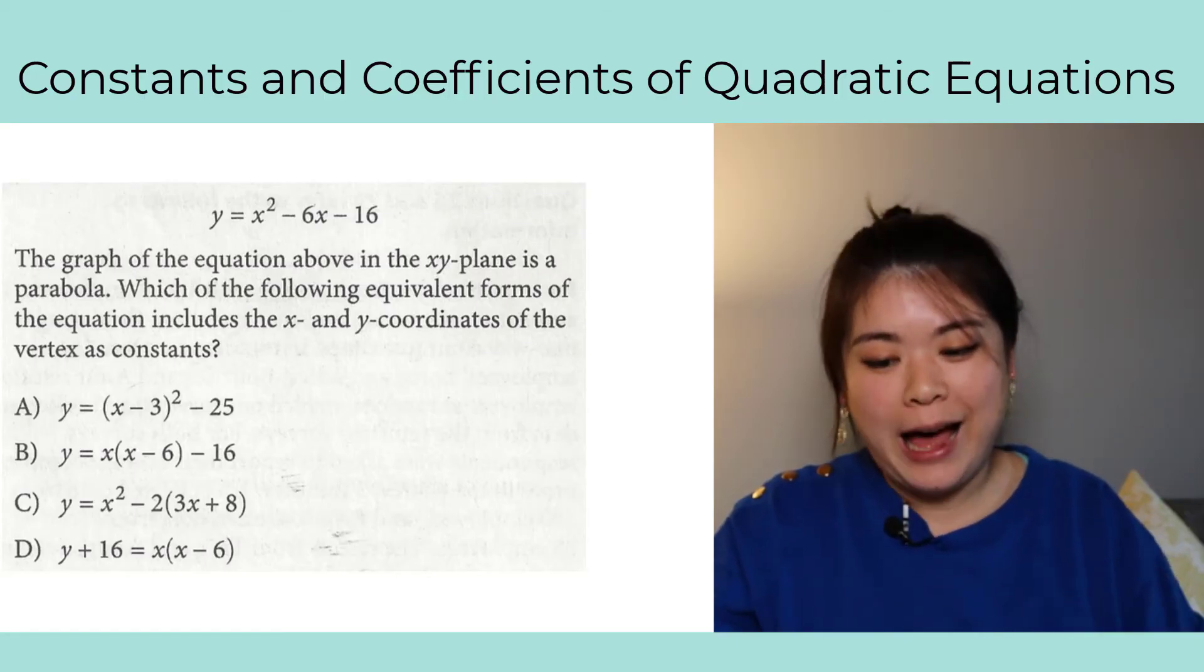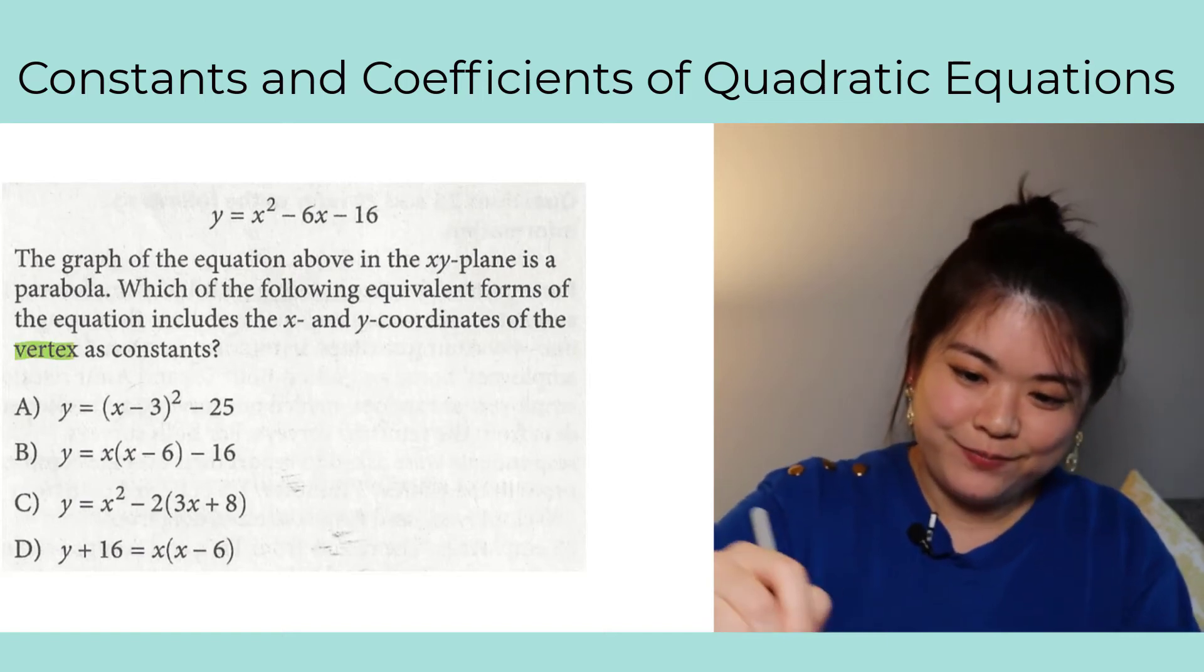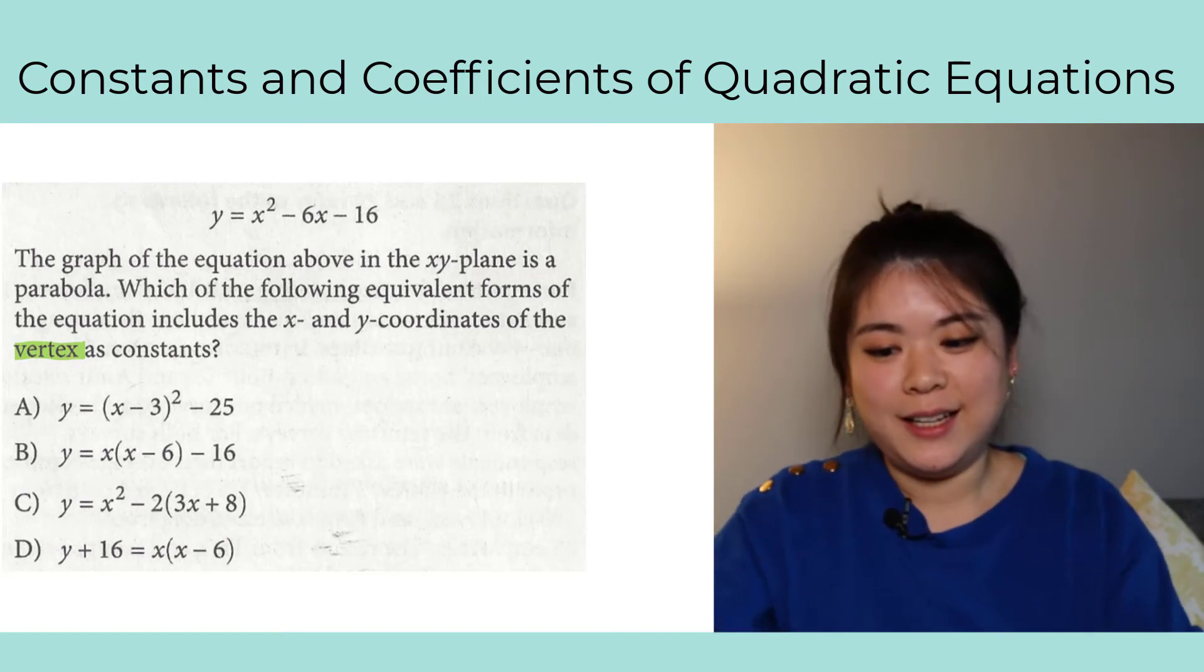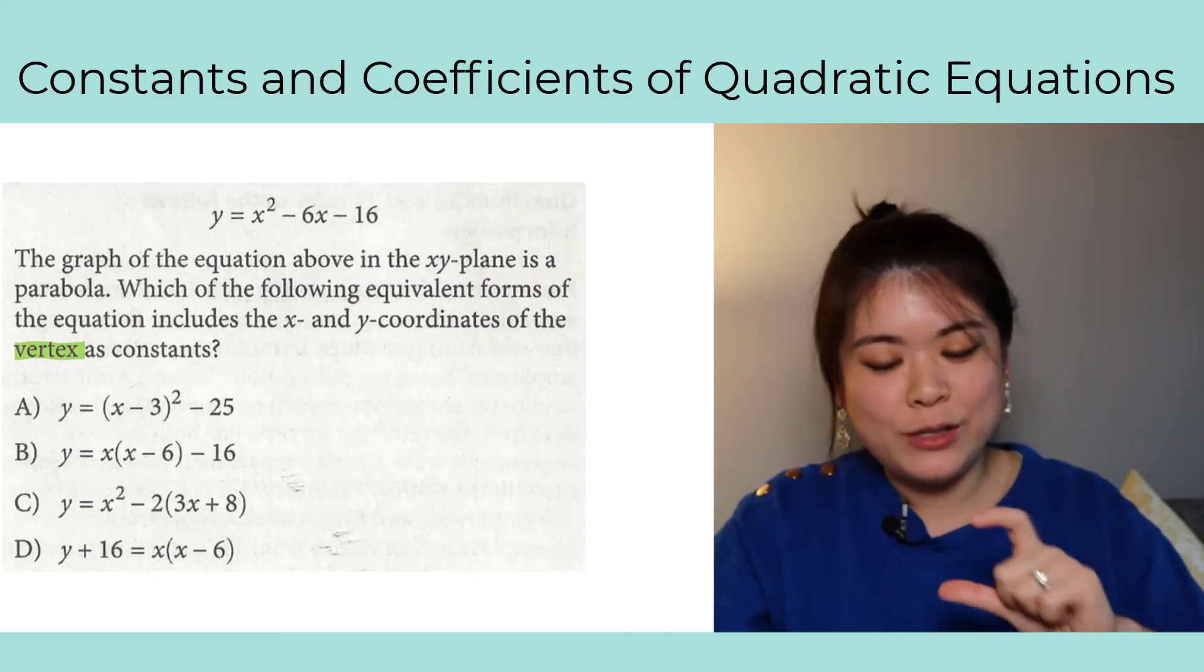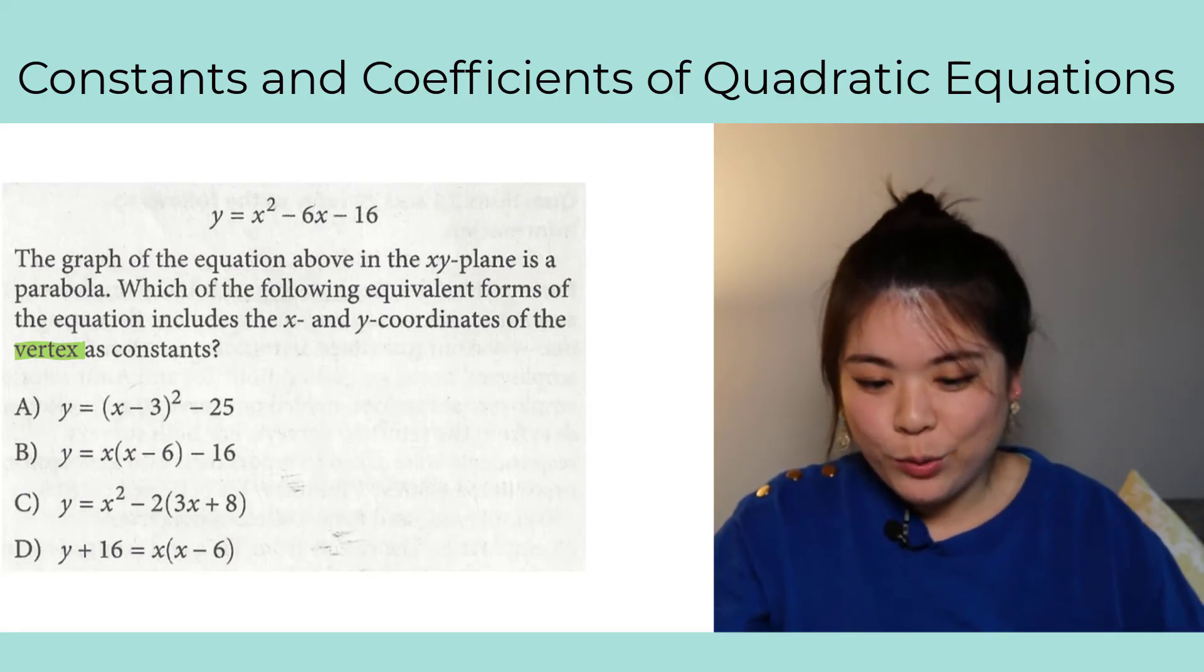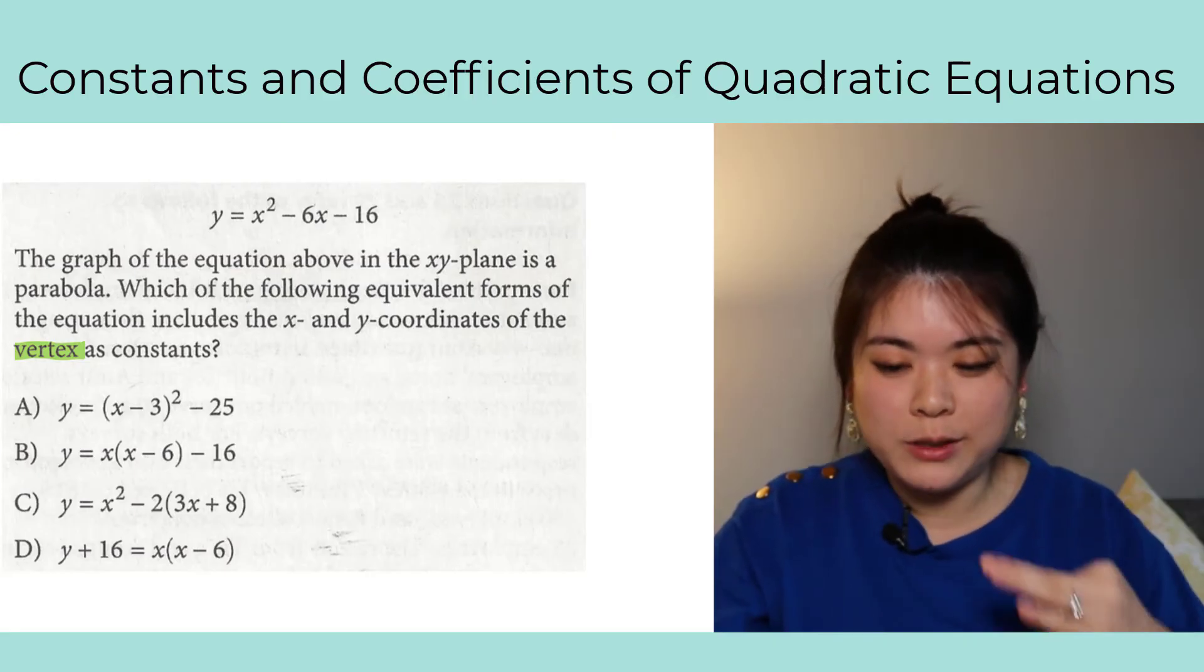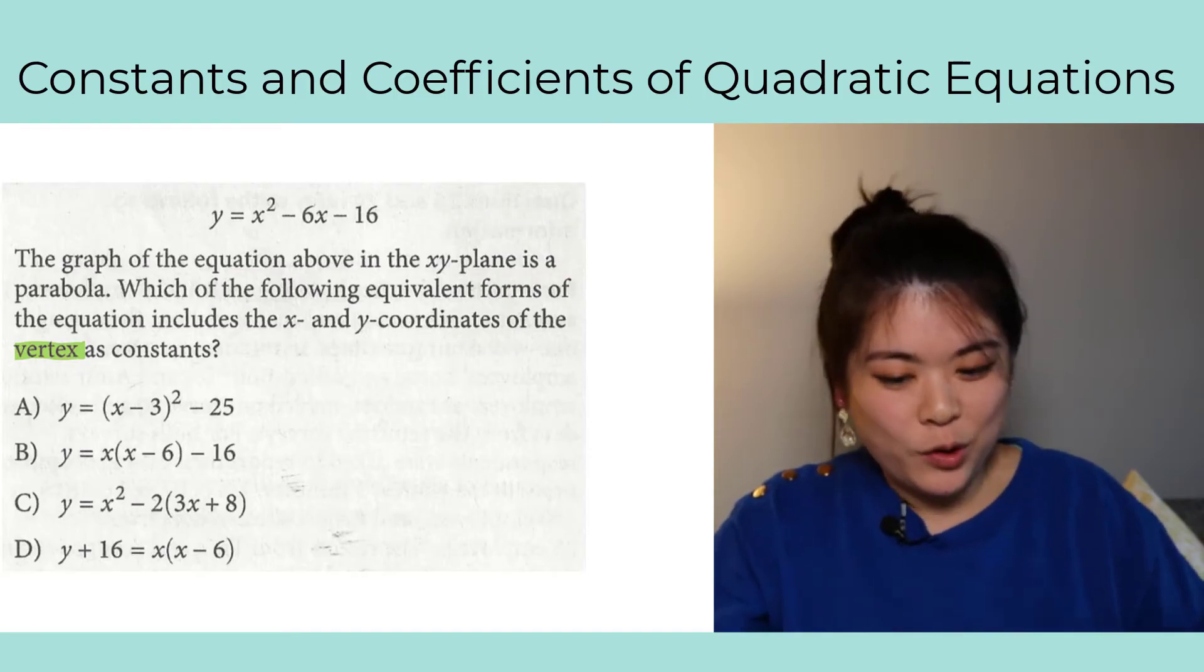And this question reads, the graph of the equation above in the xy-plane is a parabola. Which of the following equivalent forms of the equation includes the x and y coordinates of the vertex as constants? All right, do you see how similar the wording is? It's practically identical, but instead of x-intercepts, this time we have the vertex.